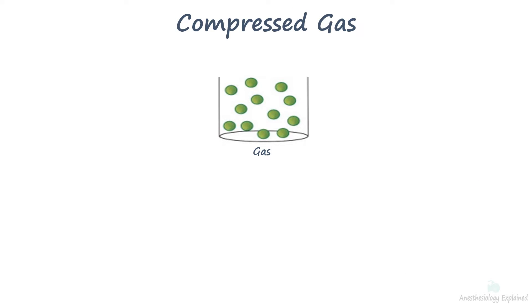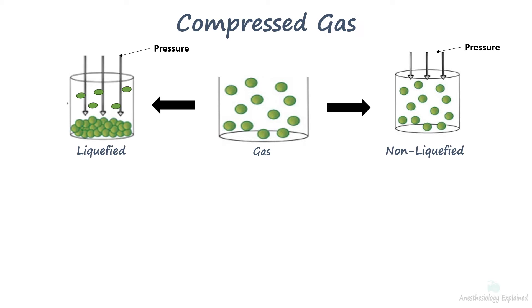Compressed gas is a substance that is a gas at normal room temperature and pressure, and is contained under pressure, usually in a cylinder. Two major types of compressed gases are liquefied and non-liquefied gases.